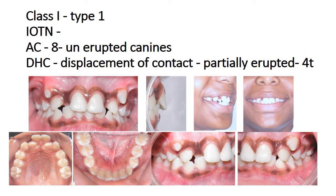Case 2 is called Class 1, Type 1 because there are proclined incisors. We can see the molar relationship is Class 1 and the type is 1. IOTN index grading: the aesthetic component is 8 because of the unerupted canine — we see the picture in the IOTN index aesthetic component chart, and picture 8 is most closely relevant. The dental health component: there is displacement of contacts and a partially erupted tooth, so the grading is 4T.